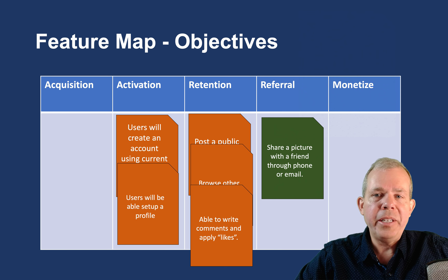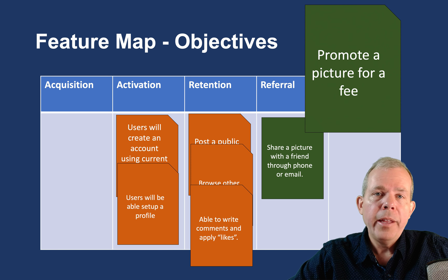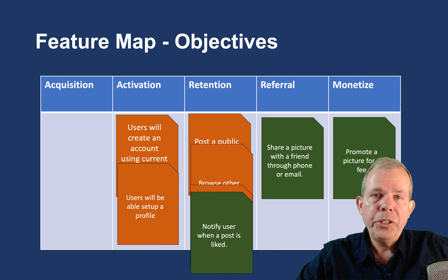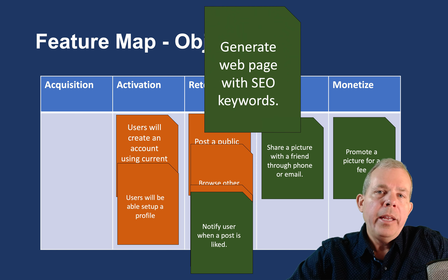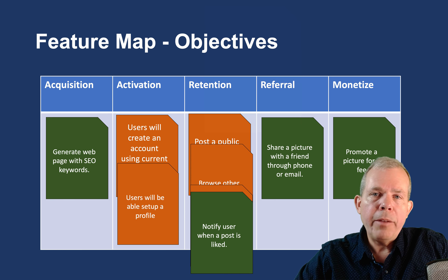We still don't have monetization and acquisition filled in. For monetization, maybe people have a desire to promote their photo or picture — or if we were doing job postings, promote your resume — something people are willing to pay for so others notice it. Here's another feature: notify the user when their post has been liked. We all want to know that people have seen our content, so we'll put that into retention. How about generating a web page? To invite people into the app, we can create deep links — if somebody is posting about a subject that would show up in Google searches, a place, an event, or a celebrity, we can pick up users through web pages.